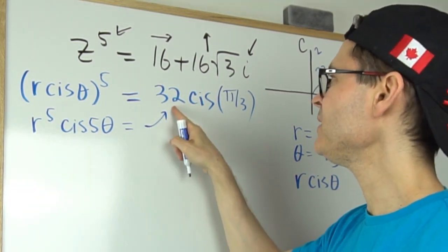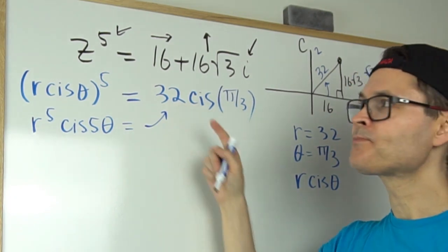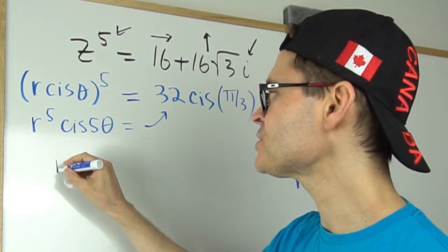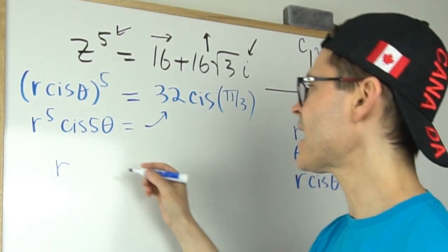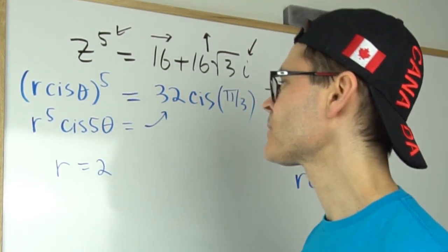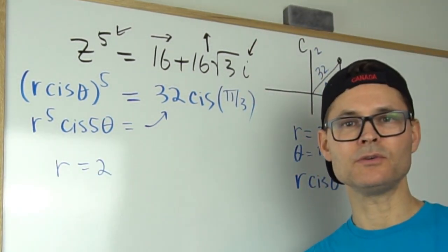I'm just going to say that's equal to that. So if r to the 5 is 32, then for our answer, our roots, the r that we want is actually 2. Because 2 to the 5 is 32.